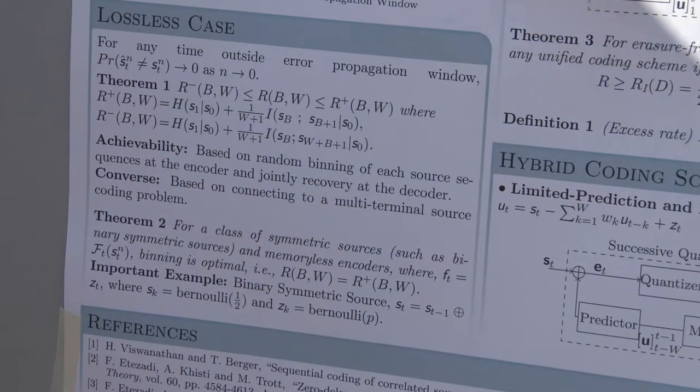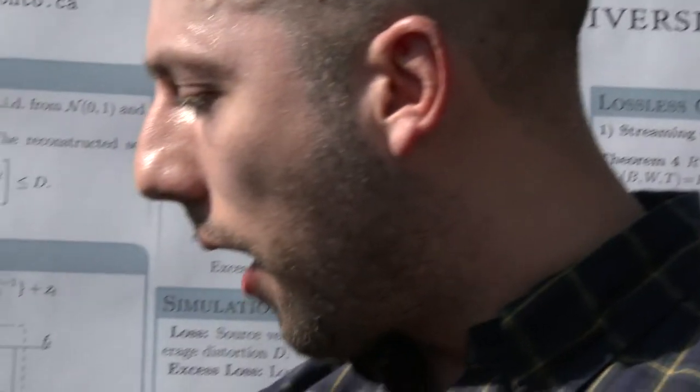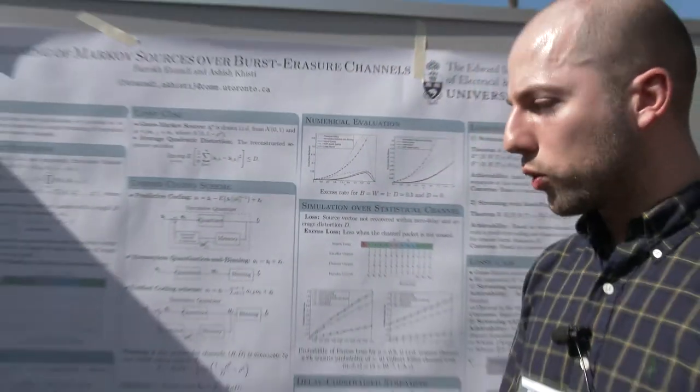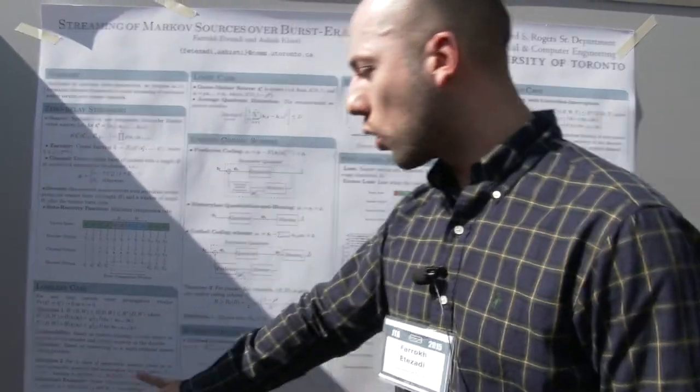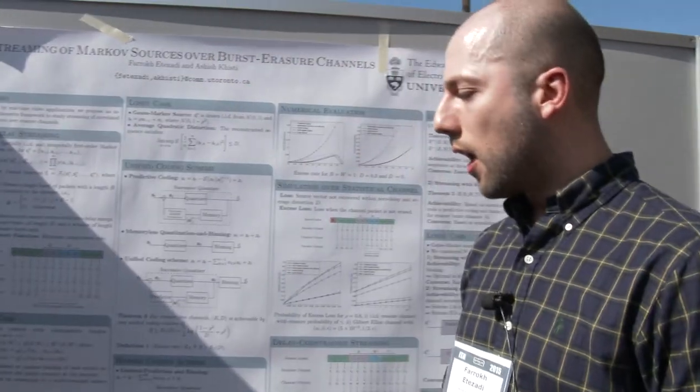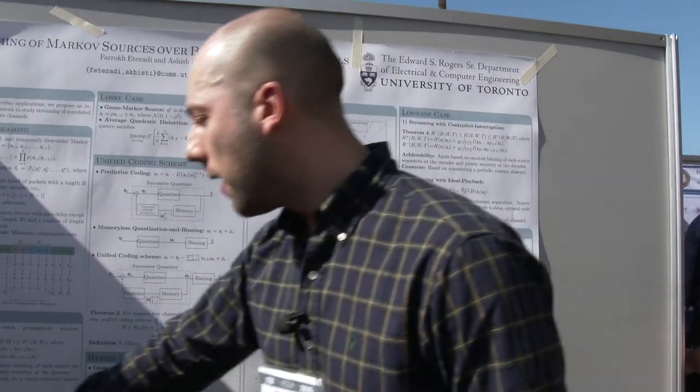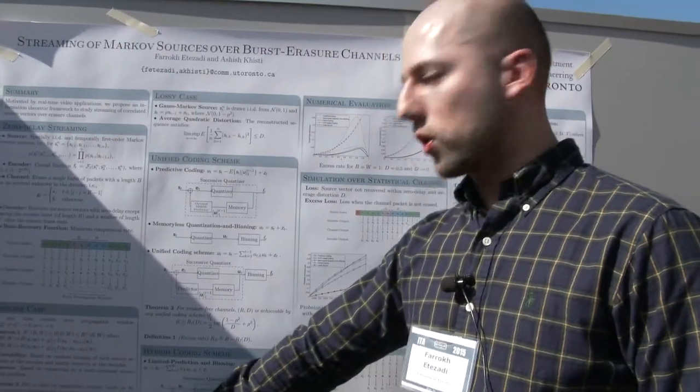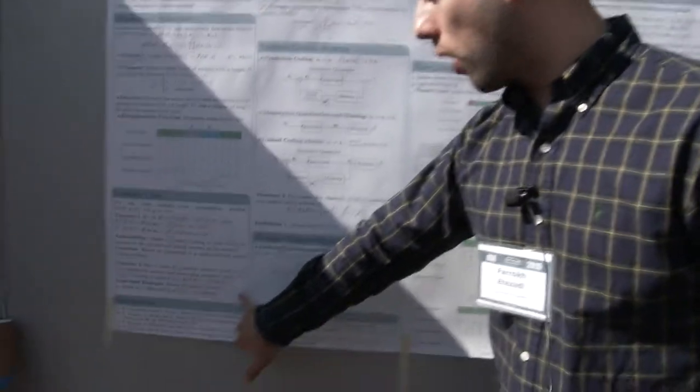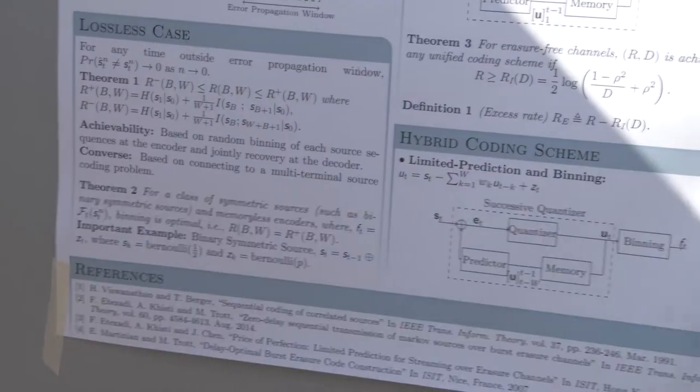The achievability is based on random binning and the converse is by connecting the problem to a multi-terminal source coding problem. The lower and upper bounds in general don't coincide, but we have some scenarios, for example, symmetric sources and memoryless encoders, where the lower bound can be improved and we show that the achievability based on binning is in fact optimal. A very important example of this is the binary symmetric sources, where S_t is S_{t-1} plus Z_t, where S_t and S_{t-1} is Bernoulli half and Z_t is Bernoulli p.